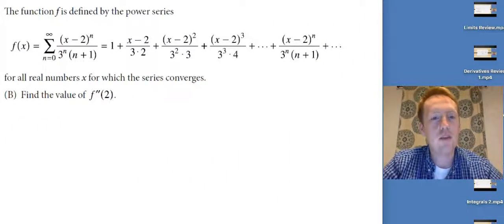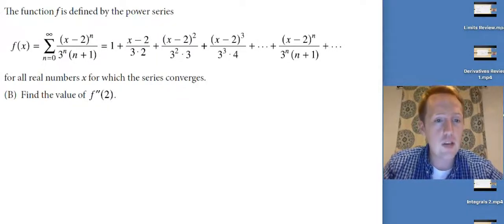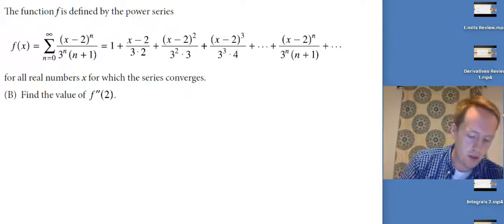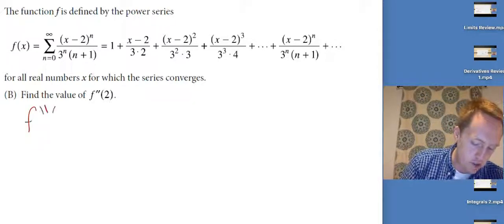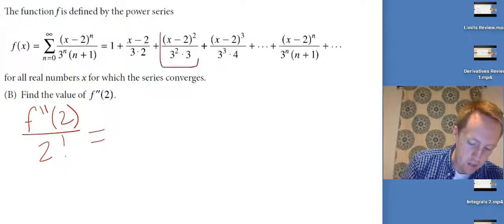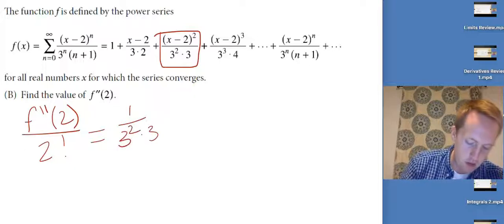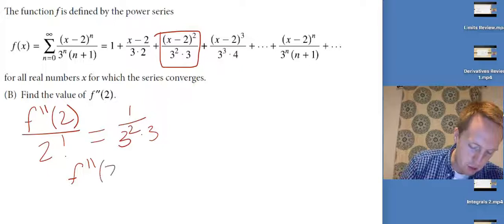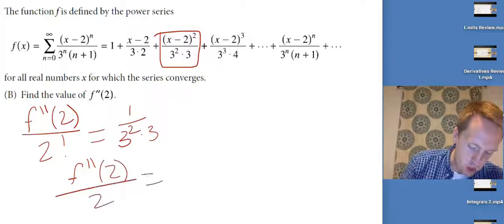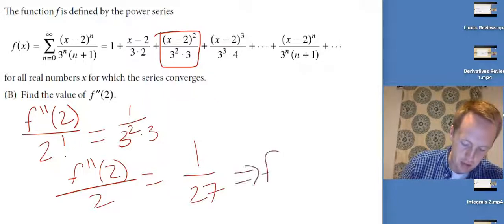The function f is defined by a given power series. Find f double prime of 2. Same idea: the second derivative evaluated at the center of the Taylor polynomial should match the coefficient of the second-degree term. The coefficient of that term is 1 over 3 squared times 3, which is 1/27. So f double prime(2) divided by 2! = 1/27. Multiplying the 2 over gives f double prime(2) = 2/27.